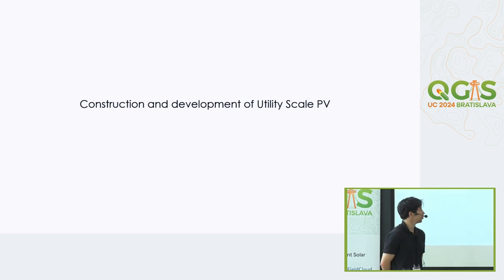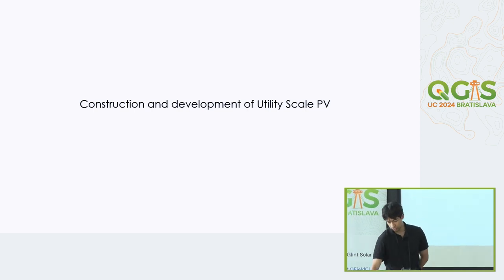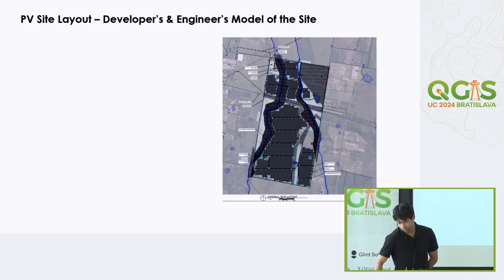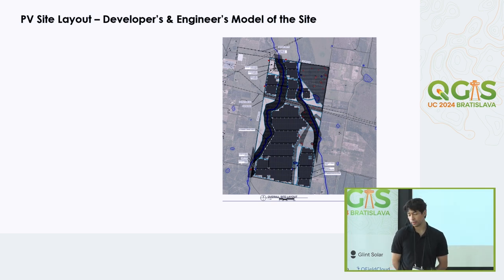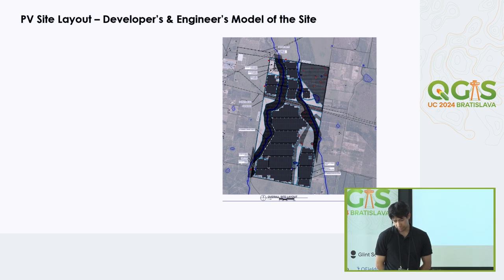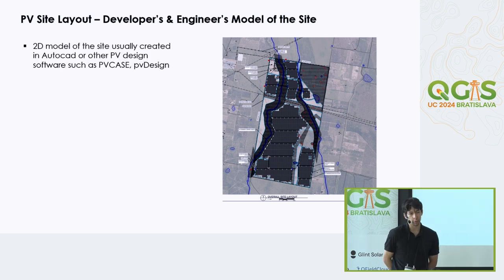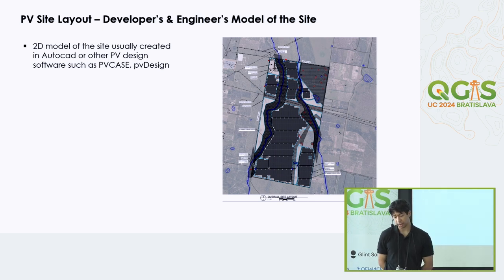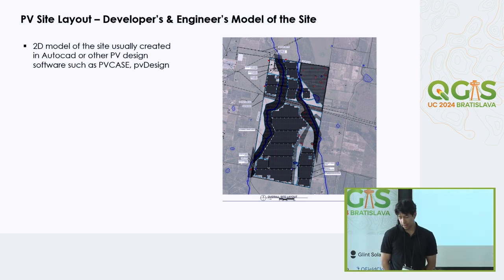I'll give some background on the construction and development of utility-scale PV — my focus is North America but this is pretty universal. To understand PV construction you have to understand PV site layouts. Developers and engineers model the site — on the right-hand side you can see a cartographic map with a bunch of blocks, those blocks are PV trackers. This is a 2D model of the site, mainly made in AutoCAD or proprietary software such as PV Design or PV Case. The idea is you lay out the site and place panels inside your project boundary.